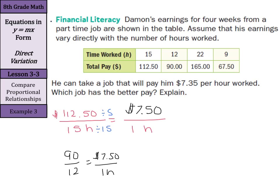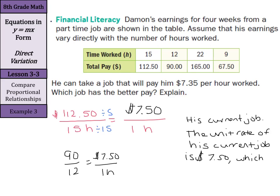So what's the better job with better pay? Well, the answer to this one is his current job. When we go to explain this, we could say the unit rate of his current job is $7.50, which is greater than $7.35 per hour. So we can look at unit rates to help us solve these problems.